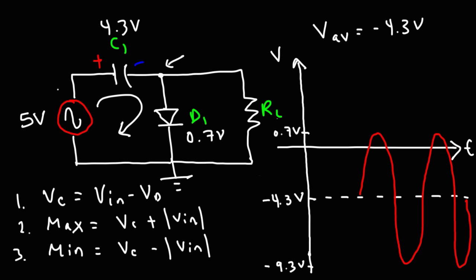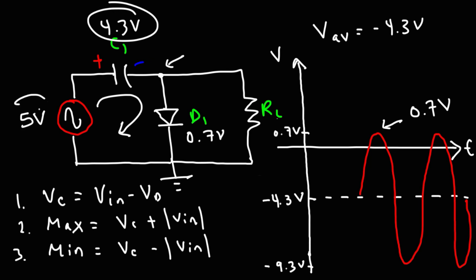To summarize: Step one, find VC as the difference between the input voltage and the diode's voltage — positive 4.3 for a positive clamper circuit, negative 4.3 for a negative clamper circuit. Step two, calculate the maximum voltage by adding VC plus 5, giving 0.7. Step three, calculate the minimum voltage by subtracting — negative 4.3 minus 5 equals negative 9.3. That's how you draw the waveform across RL. Hopefully this gave you a better understanding of the clamper circuit and how it works.